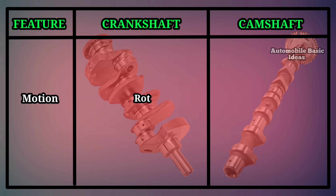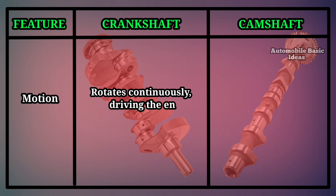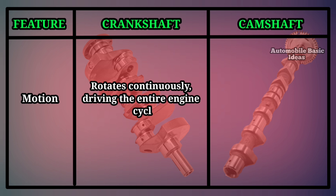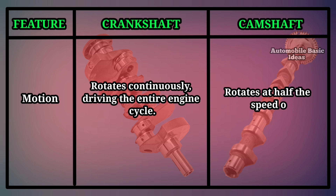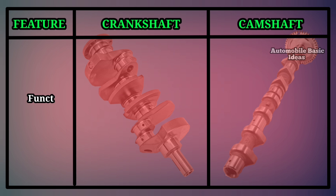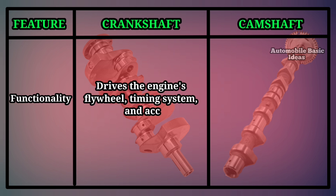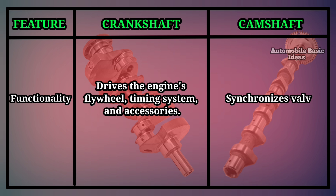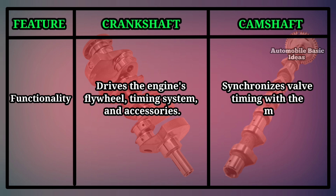Motion: The crankshaft rotates continuously, driving the entire engine cycle. The camshaft rotates at half the speed of the crankshaft in a four-stroke engine. Functionality: The crankshaft drives the engine's flywheel, timing system, and accessories. The camshaft synchronizes valve timing with the movement of pistons.